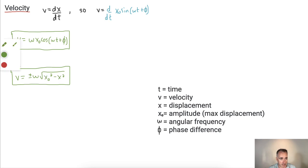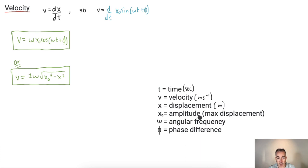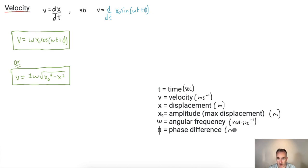Let's just talk about all these variables. t is time in seconds. v is velocity in meters per second. x is displacement from equilibrium at any time. x₀ is the maximum displacement, or the amplitude, also in meters. Omega is the angular frequency in radians per second. And phi is the phase angle, measured in radians.